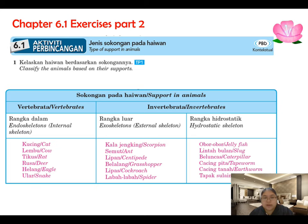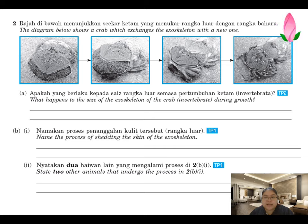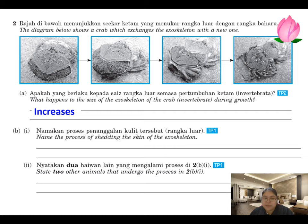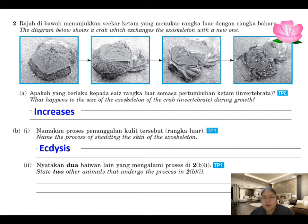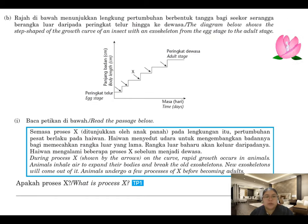Question two shows a diagram of a crab exchanging its exoskeleton. When a crab sheds its old exoskeleton, the new one is bigger. The size of the exoskeleton increases during growth. The process of shedding the skin of the exoskeleton is called ecdysis. Two animals that undergo ecdysis are the crab and the scorpion.